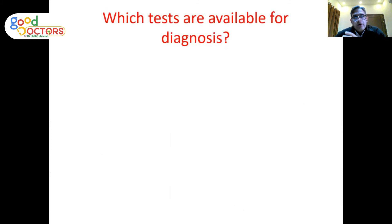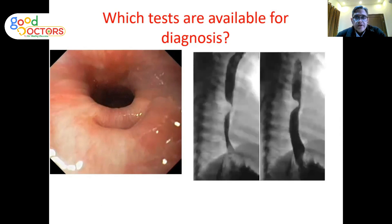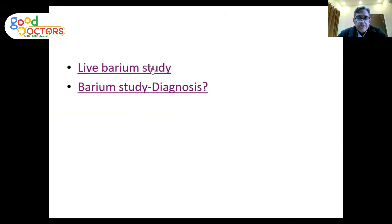Briefly regarding investigations: for esophageal disease, endoscopy is used — mechanical causes such as malignancies, strictures, and Schatzky's ring are easily visualized. Barium study is particularly useful for motility disorders, but importantly it is a dynamic study that must be interpreted while the patient is swallowing the barium under fluoroscopy, not on a static X-ray film. Under fluoroscopy you can see motility disorders and obstructions.